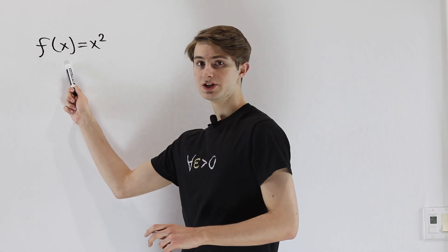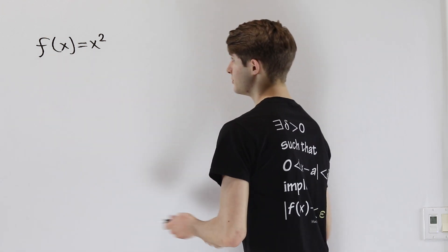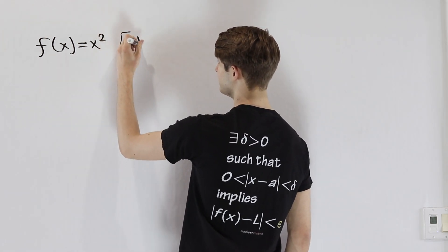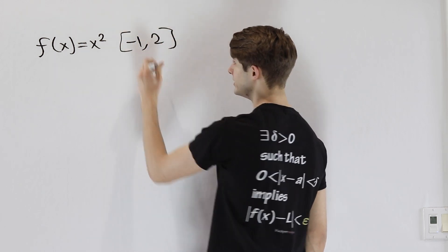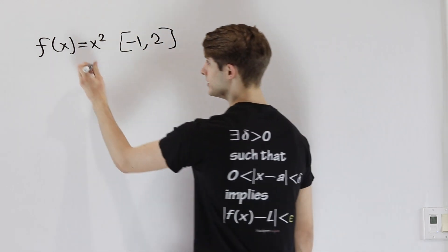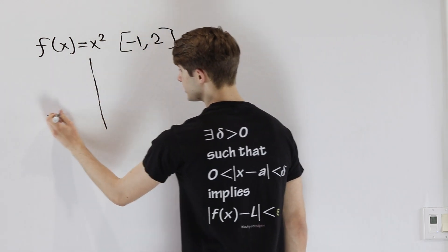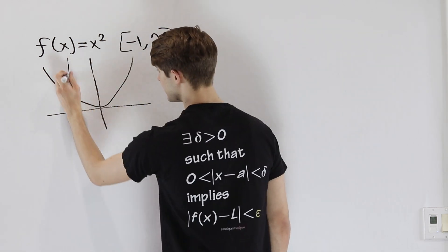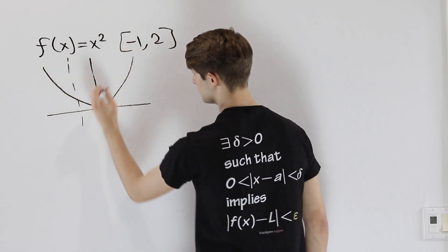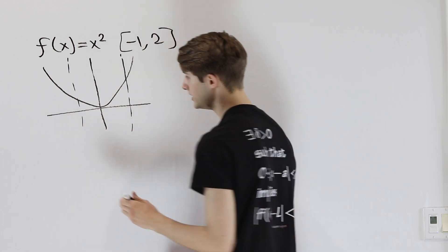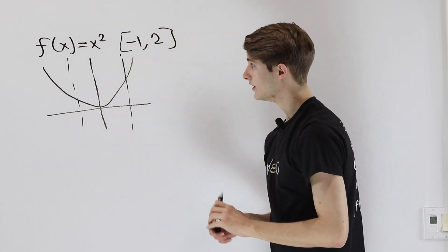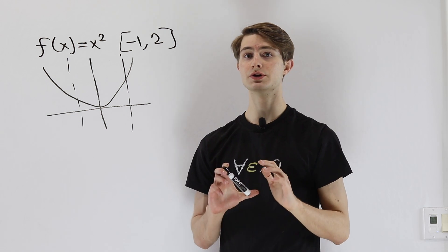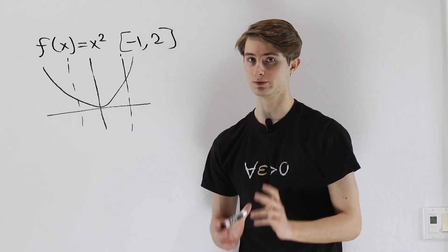Let's say we're looking at the function f of x equals x squared, and we want the maximum and minimum values within the range negative 1 to 2. If we look at our function f of x equals x squared and we have the bounds negative 1 and positive 2, what we want to find from single variable calculus is first the critical points.